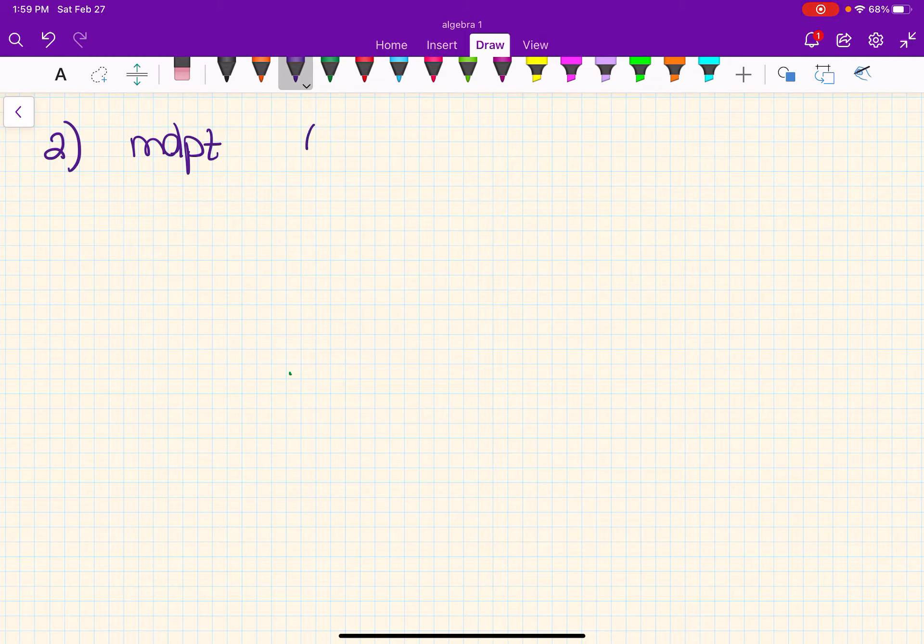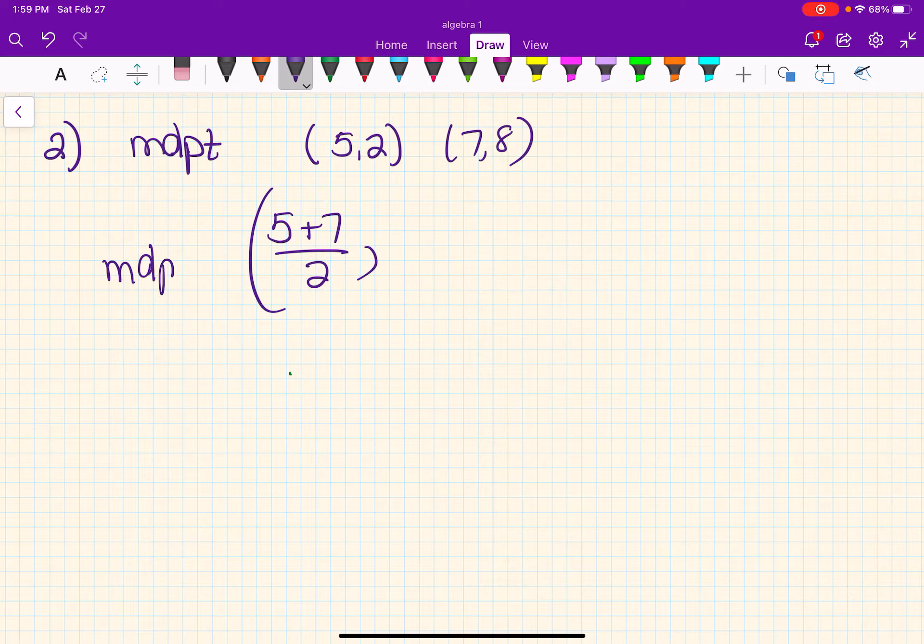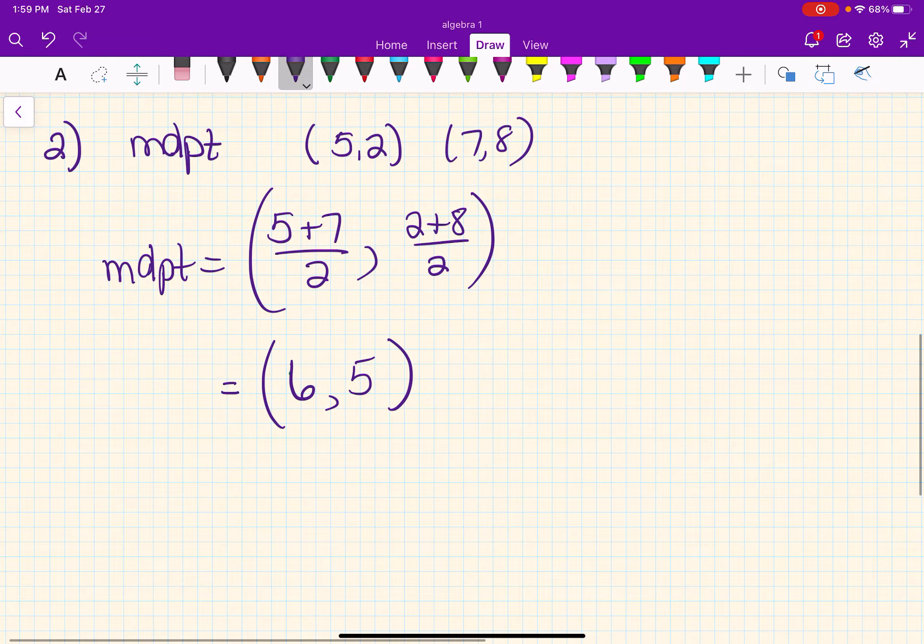We're trying to find the midpoint between 5, 2 and 7, 8. So it would be 5 plus 7 over 2, and 2 plus 8 over 2. And actually, that's as much work as you need to show. Okay? So if you show that kind of work, that's enough for me.